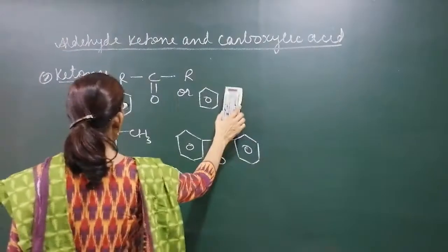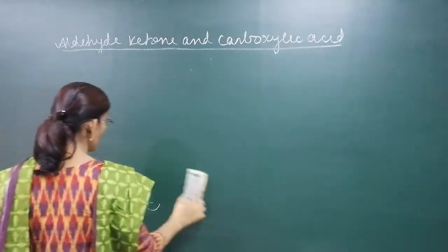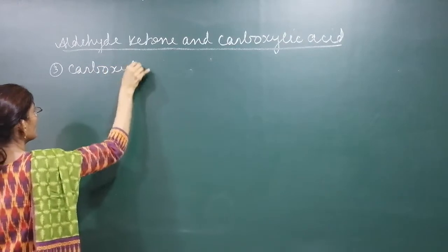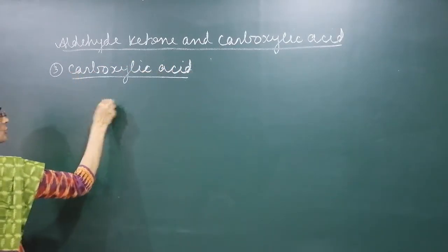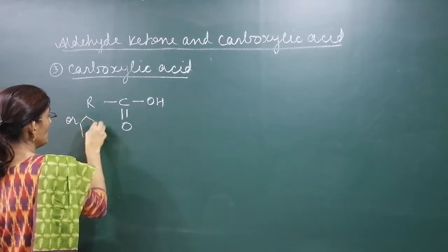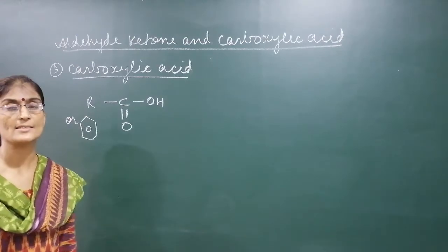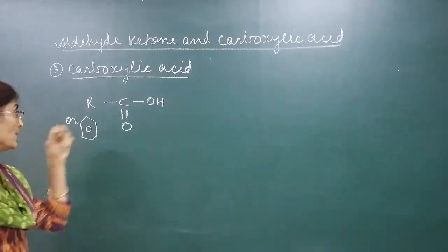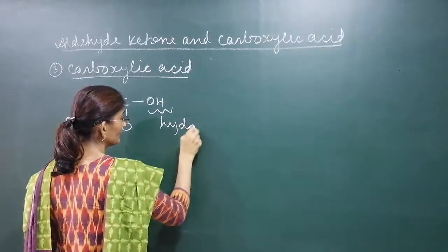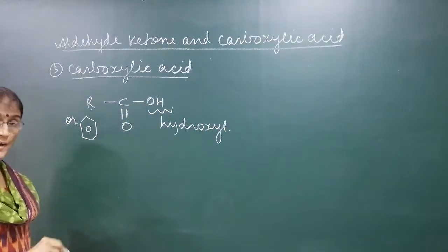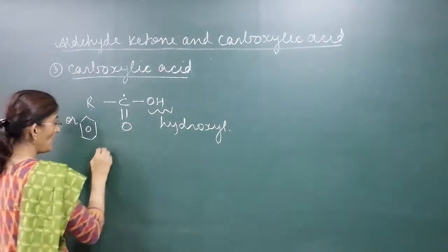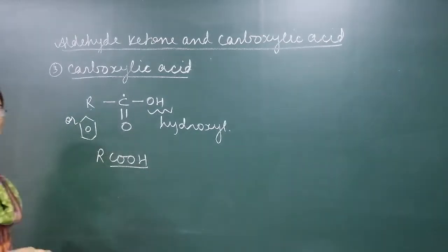The third type of carbonyl compounds are carboxylic acids. In carboxylic acids, we have a C=O group where one of the valencies is satisfied by a hydroxyl group (–OH), and the other is satisfied by an alkyl or aryl group — then it is known as carboxylic acid. So, the carbonyl group is attached to a hydroxyl group. The general formula is R–C(=O)–OH. The functional group –COOH is the functional group of carboxylic acids.